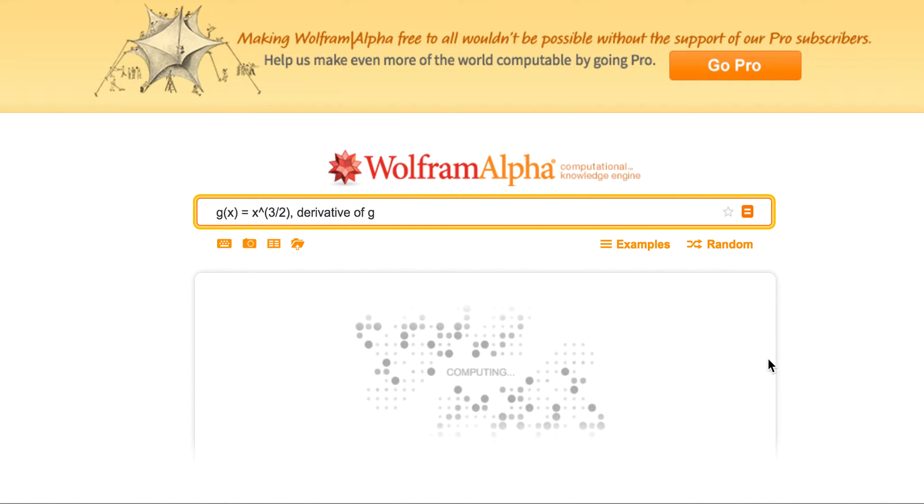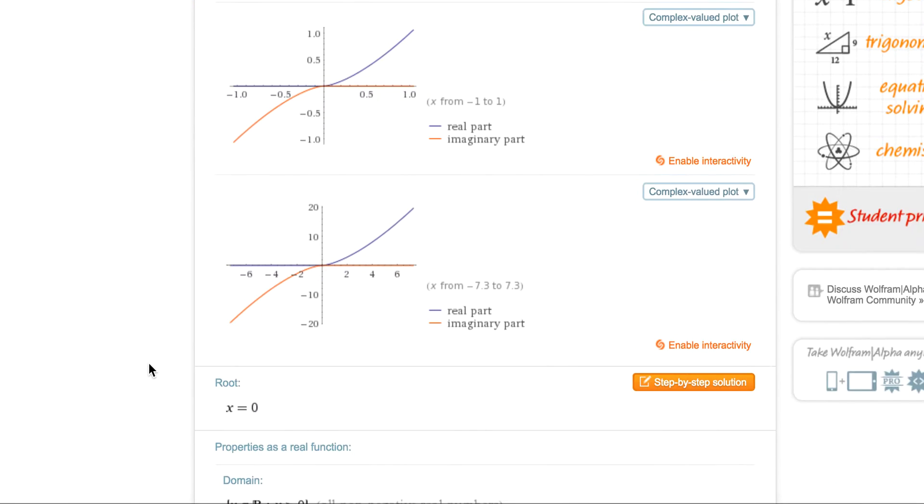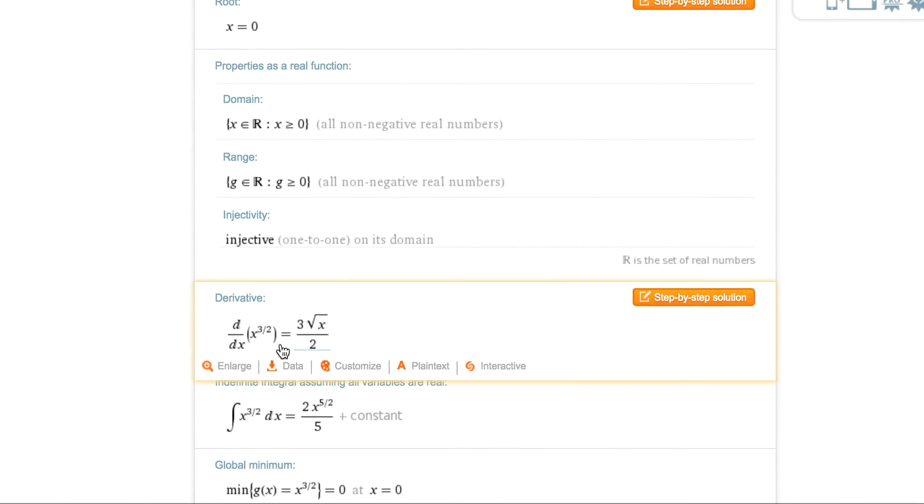Computing. Can take a second. Okay, so there's your input function. Domain. Here's the derivative right there. Derivative of x to the 3 halves is 3 square root x over 2. That's it. Pretty simple, right? Let's look at another problem.